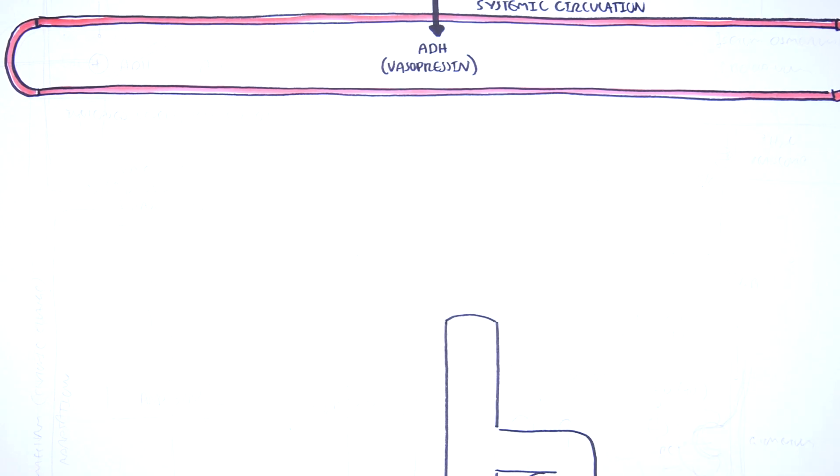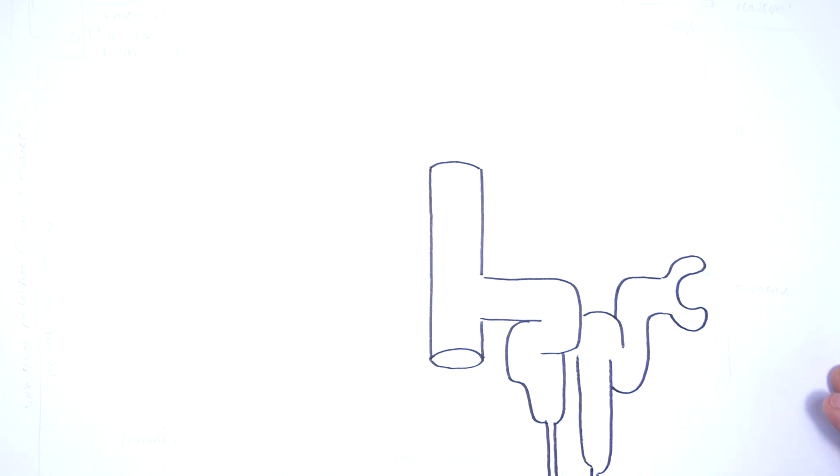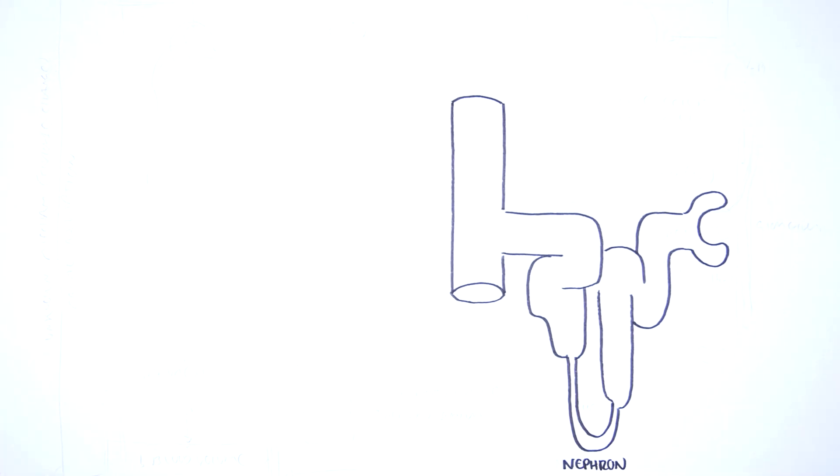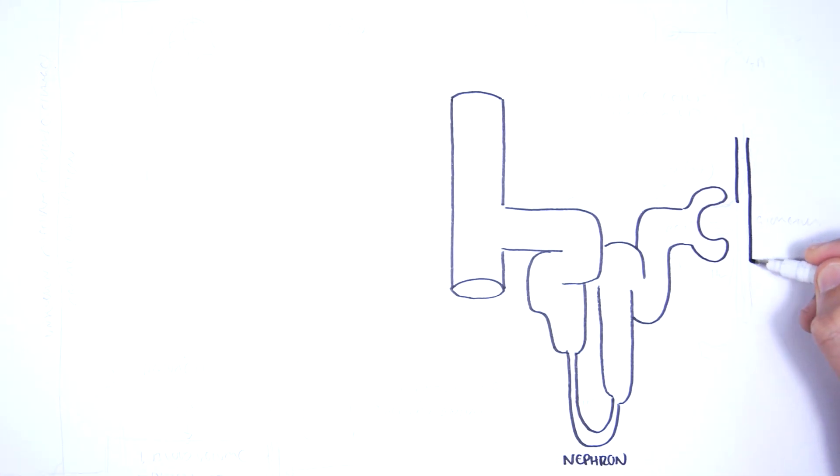The kidneys are made up of their functional units called nephrons, and here is one nephron as an example. Afferent arterial will bring blood to the head of the nephron, forming what's known as the glomerulus.